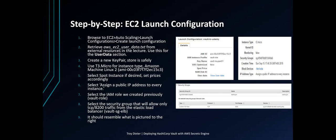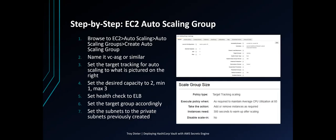Next we're going to set up the Auto Scaling Group. Browse to EC2 Auto Scaling, then Auto Scaling Groups, and create an Auto Scaling Group — name it 'vault-asg' or similar. Set the target tracking for auto scaling as pictured, setting it for CPU utilization at 85%, so those T3 Micros would have to exceed 85% usage before they scale up.